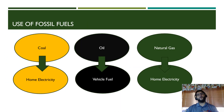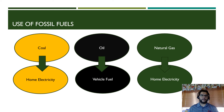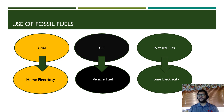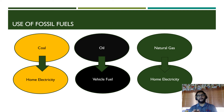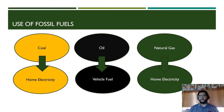It's important to know where these fuels are used. Coal is a home electricity and power grid fuel — you're not putting coal in a car engine. Oil is typically a vehicle fuel. Natural gas is typically a home electricity fuel, but when liquefied it can also be used as a vehicle fuel.